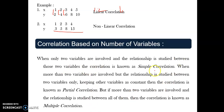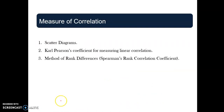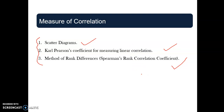Based on the number of variables: if only two variables are involved, it is simple or bivariate correlation. If more than two variables are involved but the relationship is studied between two at a time keeping others constant, that is partial correlation. If more than two variables are involved and the relationship is studied among all of them together, that is multiple correlation. Correlation can be measured by three methods: scatter plots, Karl Pearson's coefficient of correlation, and Spearman's rank difference method. There are other methods in non-parametric statistics, but right now we are discussing parametric statistics.